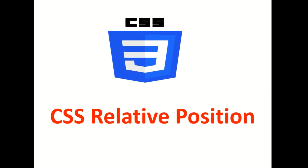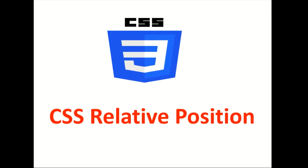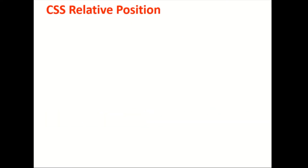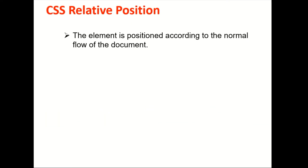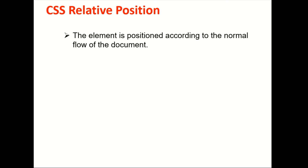The CSS position property is what we are going to see. The element is positioned according to the normal flow of the document. This is the relative position. This is the static position — in the previous video we have seen the static position. This is the normal flow.